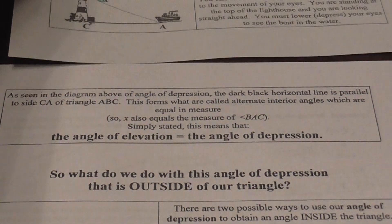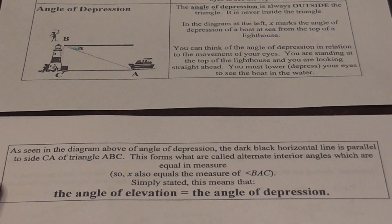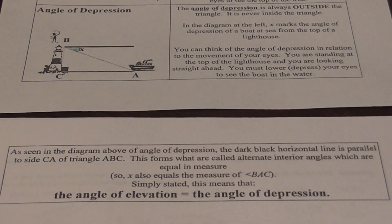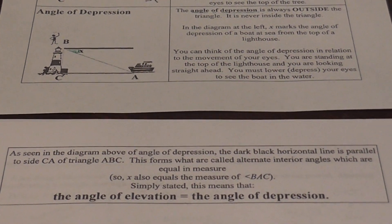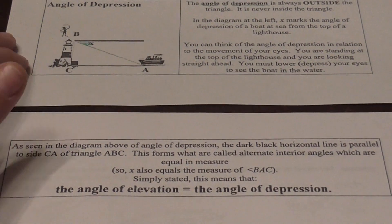Okay, if you're looking at the diagram above, see if I can manage this in the video. Okay, of the angle of depression, the dark black horizontal line is parallel to the side CA of your triangle ABC.